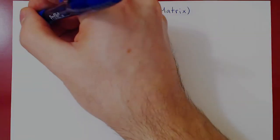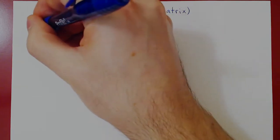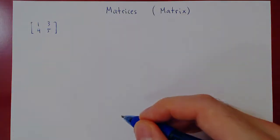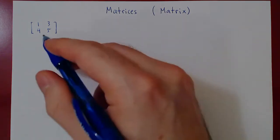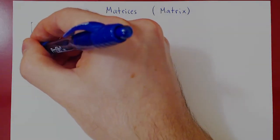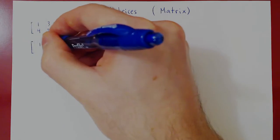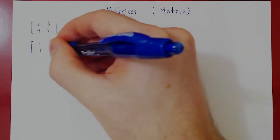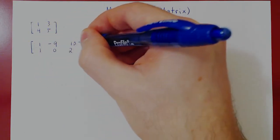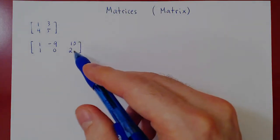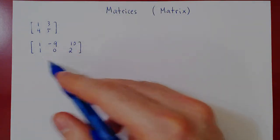For example, 1, 3, 4, 5 is a matrix. It's a rectangular array of 4 real numbers. Another matrix is 1, negative 9, 10, 1, 0, 2 — a rectangular array of 6 numbers.